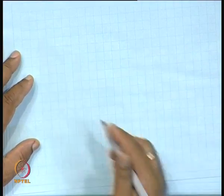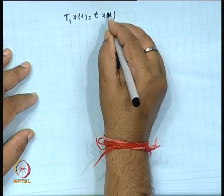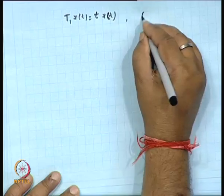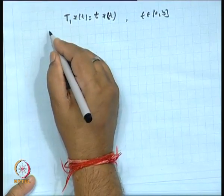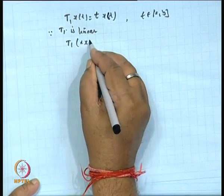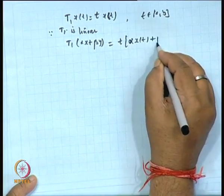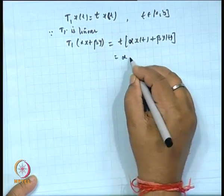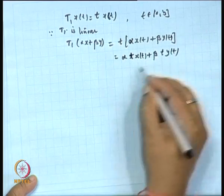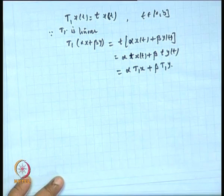Another operator can be defined on C[a, b]: let T₁(x)(t) = t · x(t). This is also a linear operator because T₁(alpha·x + beta·y) = t·(alpha·x(t) + beta·y(t)) = alpha·t·x(t) + beta·t·y(t) = alpha·T₁(x) + beta·T₁(y). So T₁ is a linear operator.